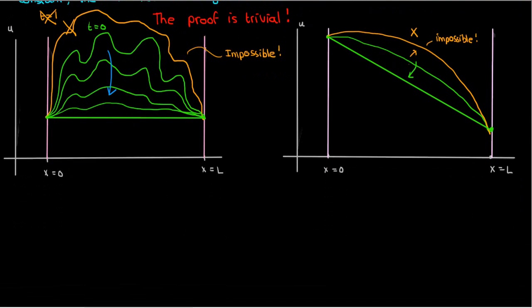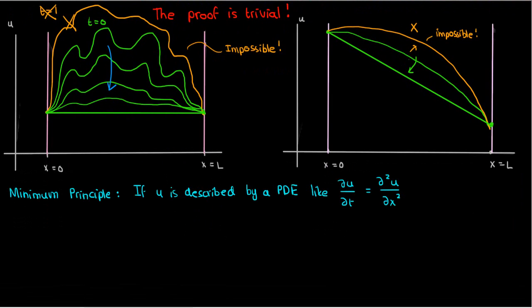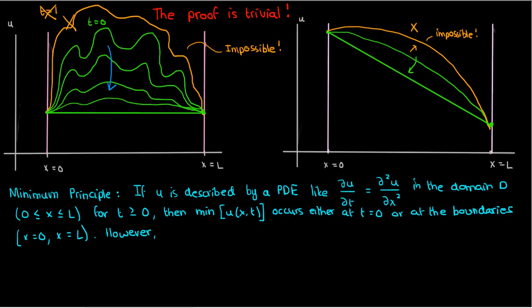In fact, in addition to the maximum principle, we also have the minimum principle. This just says that if a function u is described by the 1d heat or diffusion equation, its minimum value is achieved either at t equals 0 or somewhere at the boundaries unless it happens to remain constant.